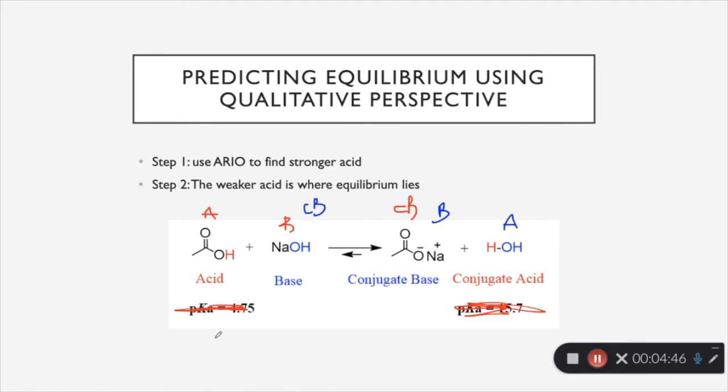So now we're looking at the conjugate base of water, which is NaOH. But as you know, NaOH dissociates in solution. So really, the conjugate base is going to be OH with a negative here on this oxygen. So looking at ARIO, for atom, it's on an oxygen, and this has no resonance.